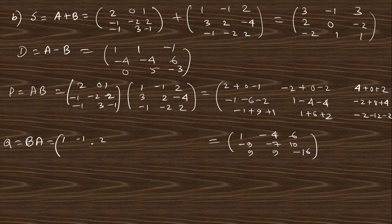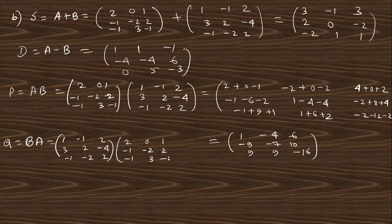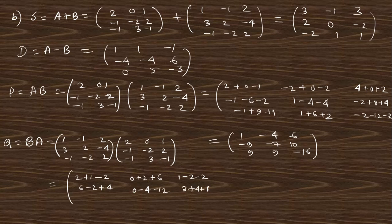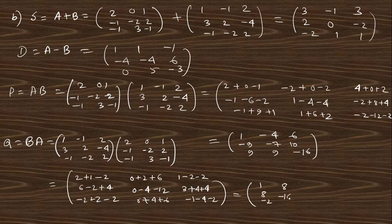Next, Q = BA — just write down the two matrices in reverse form: B is [1, -1, 2; 3, 2, -4; -1, -2, 2] into A is [2, 0, 1; -1, -2, 2; -1, 3, -1]. The product gives [1, 8, -2; 8, -16, 10; -3, 11, -7].